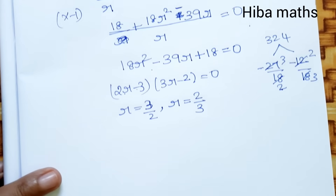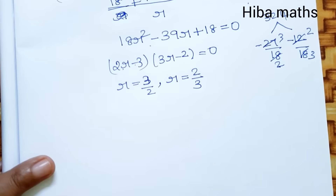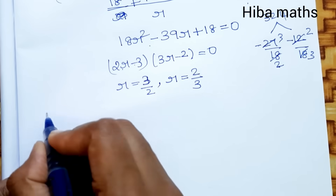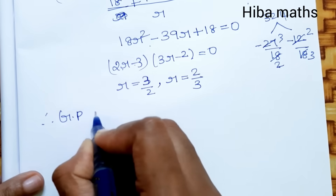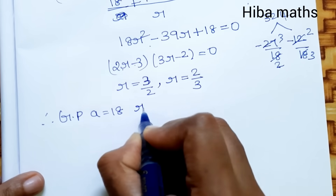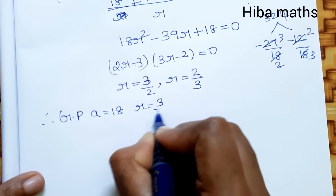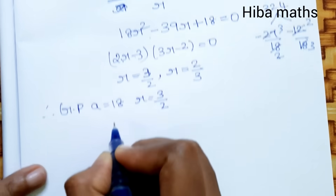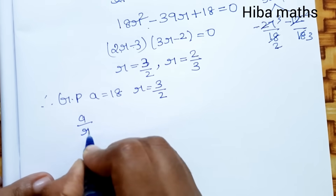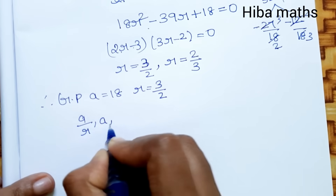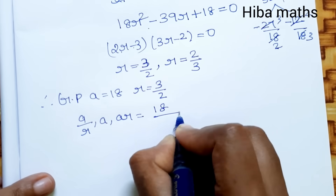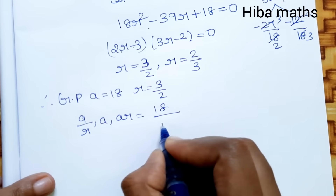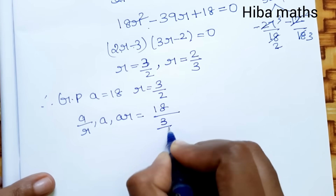Therefore r equals 3/2 or r equals 2/3. Since the numbers are increasing in GP, we take r equals 3/2. Now substitute a equals 18 and r equals 3/2 into a/r, a, and ar.